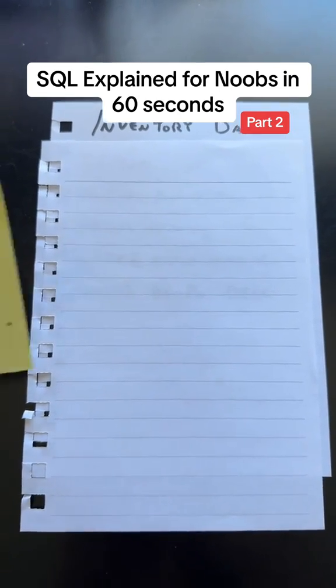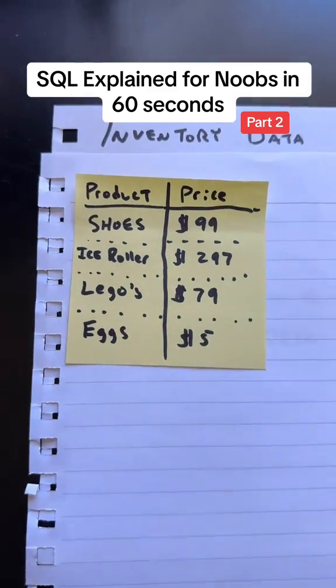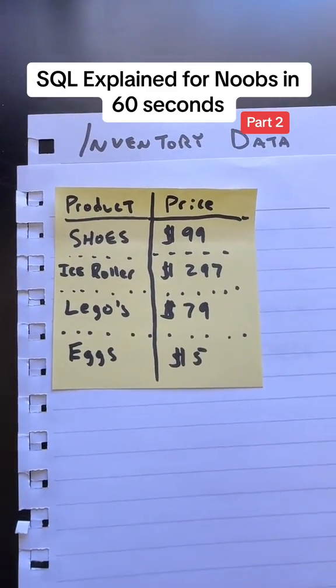In this example, I'm going to be using inventory data that would look something like this, where it would have product as a column and then price as a column.